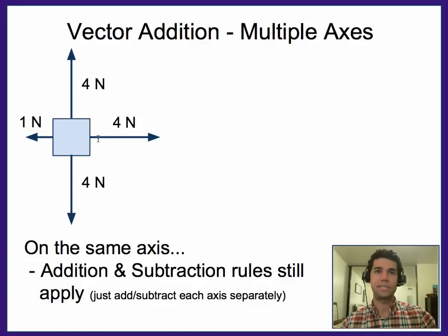Vector addition. We've talked about it on the same axis before, now let's do it on multiple axes. First what we do is we apply the same rules as we did before to having vectors on the same axis, and we apply that to simplify this. So the goal is to simplify it to simply two vectors, in other words the net or resultant vector along the x-axis and then the resultant vector along the y-axis.